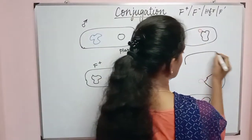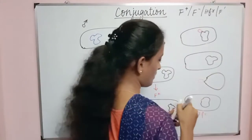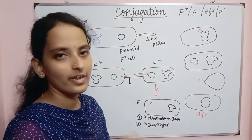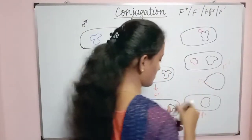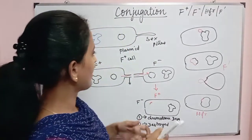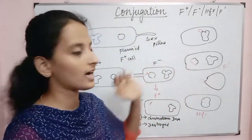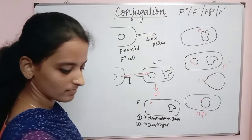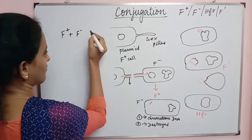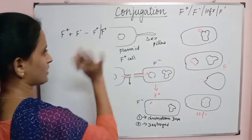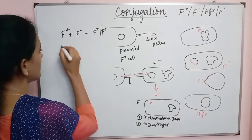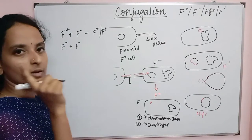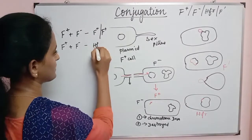So this bacterium also contains a chromosome. A portion of the plasmid with a portion of the chromosome — this is called the F prime factor, or F' cell. So the F' prime cell contains a portion of plasmid together with a portion of chromosomal DNA.